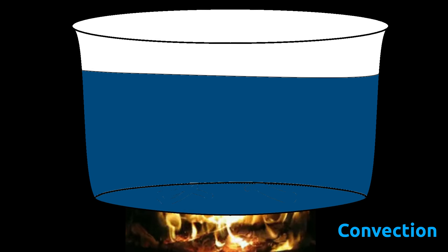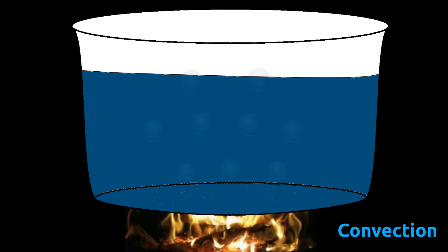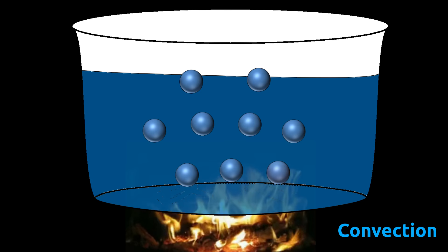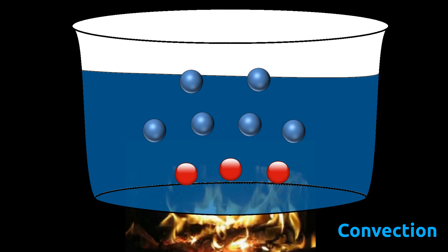In the convection method, movement of particles of liquid or gas causes transfer of heat from the heat source. Let's take an example of a pot of water. As we heat it, water particles near the heat source get heated first.